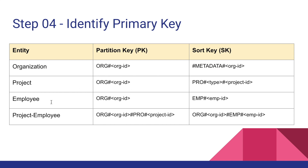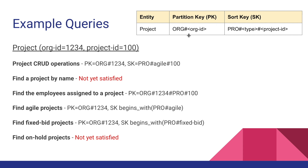That's why we use the organization ID as our partition key for projects and employees — otherwise your query will return results belonging to other organizations as well. For CRUD operations on an employee, let's say the organization ID is 1234 and the project ID is 100. The primary key value is org1234 and the sort key value is pro hash, then the type — say agile — then the project ID 100. This will return a single item.